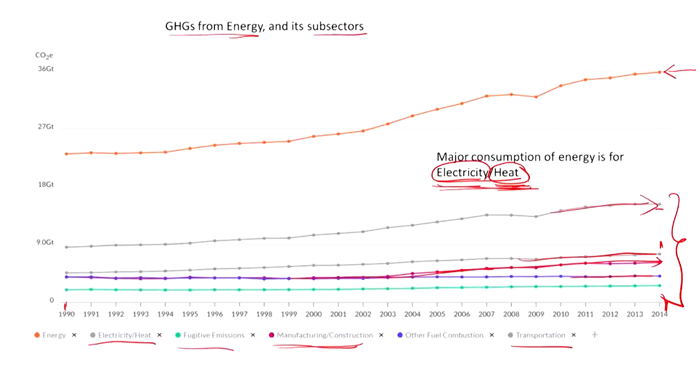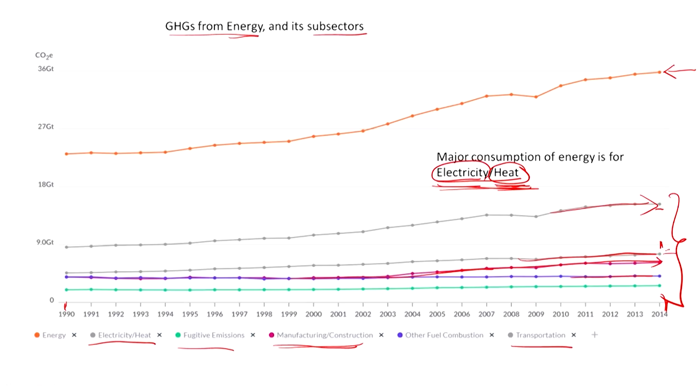The three major contributors to energy-related greenhouse gas emissions are electricity and heat, transportation, and construction. Energy is by far the most significant contributor overall. In terms of solutions, you can look for better insulating materials — the European Union has pushed for better cladding to keep houses warmer with less energy input. There will also be a push for renewable energy sources like solar power, and regulations or innovations to minimize emissions from transportation and construction.